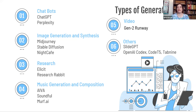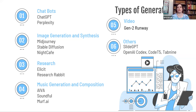We also have image generation and synthesis tools like Mid-Journey, Stable Diffusion, or Night Cafe — I like Night Cafe and I'll show you that one today. Under research, there are tools like Elicit and Research Rabbit — that's the new one. Then we have music generation tools like AVA, Soundful, and Murph. For video, they're still new — the one I've heard about is Gen2 Runway. There are also others like SlideGPT for creating slides, OpenAI Codex, CodeT5, Tab9, and others. The list is endless.